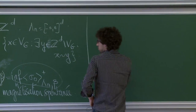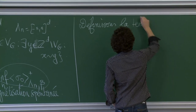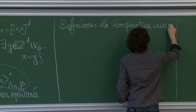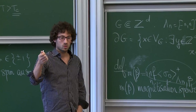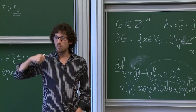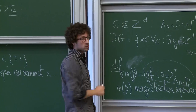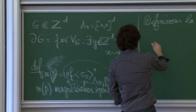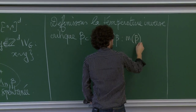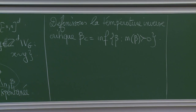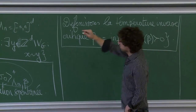On définit la température inverse critique β_c comme l'infimum des β tels que m(β) > 0 — c'est la plus petite température inverse à laquelle l'aimant est naturellement magnétisé. β est une température inverse : plus β est grand, plus on prend en compte l'énergie ; la température T est comme 1/β. La réponse dépend de la dimension d.